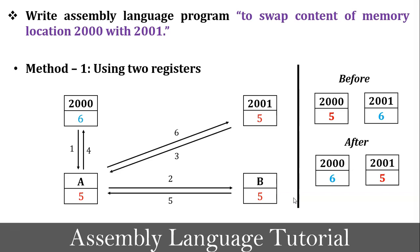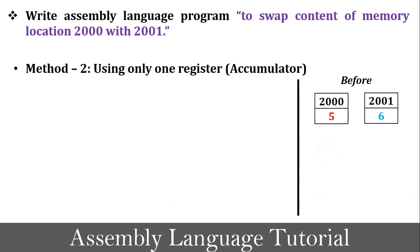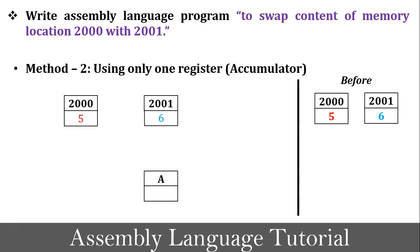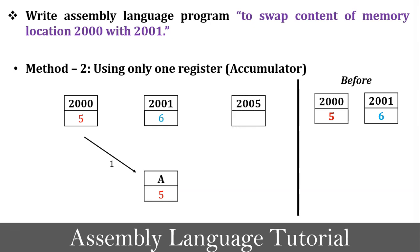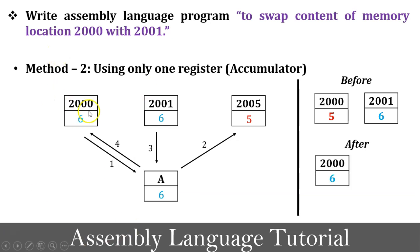This completes Method 1 for swapping the content of memory locations 2000 and 2001 using two registers. Now for Method 2, we swap using only the accumulator. In step 1, value 5 is copied into the accumulator from memory location 2000. Since we cannot use a second register, in step 2 the accumulator value is copied into memory location 2005 as temporary storage. In step 3, value 6 is copied into the accumulator from memory location 2001. In step 4, value 6 is copied into memory location 2000.